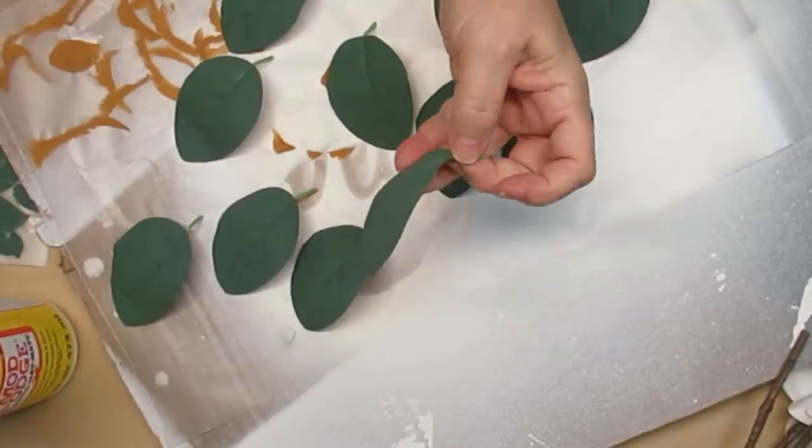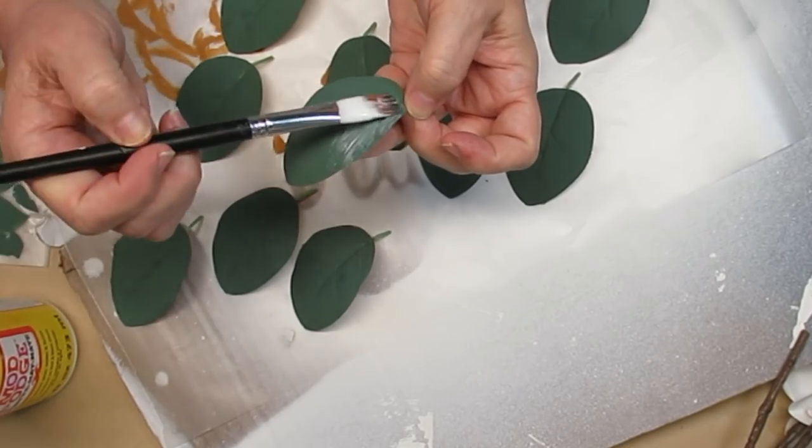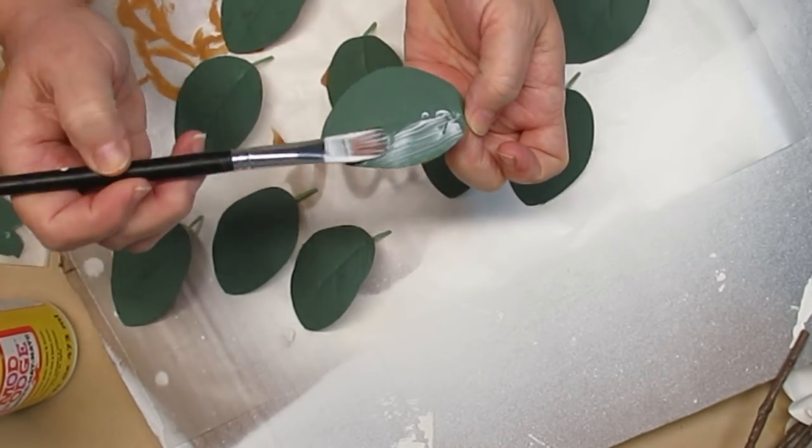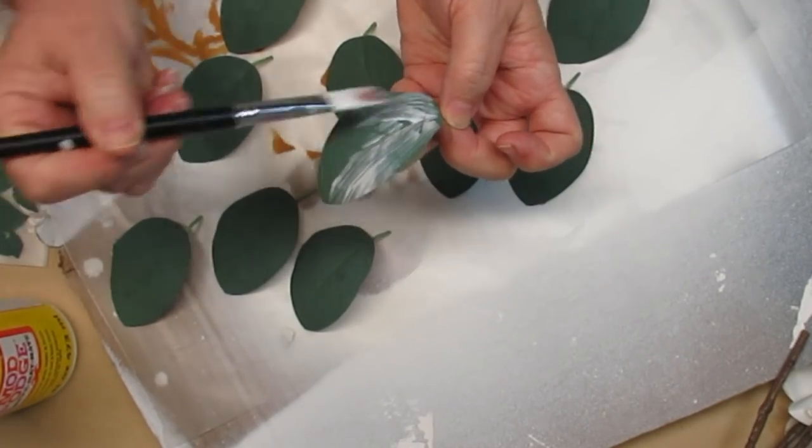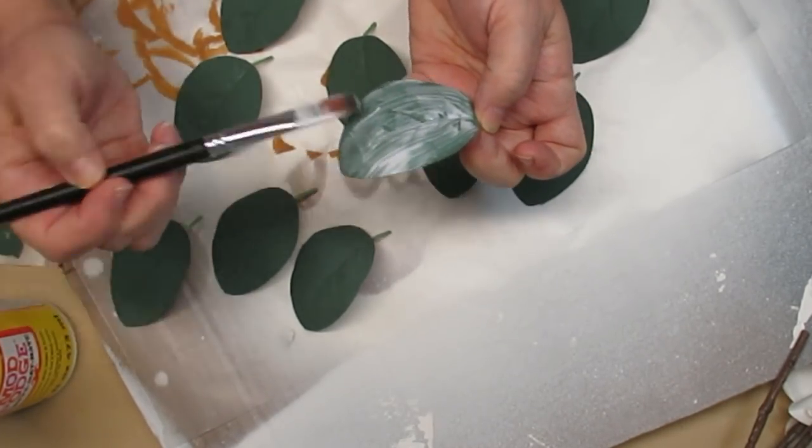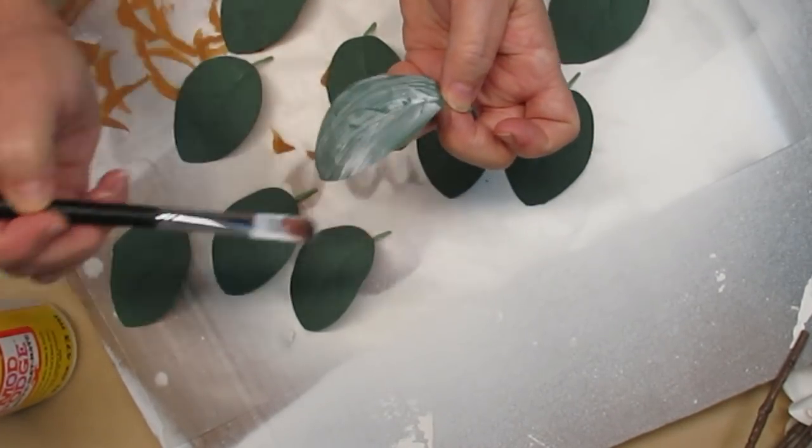True magnolia leaves have a bit of a shine on the top of them so I am taking my matte mod podge and I'm going to give them a coat and this is just going to shine them up just a little bit to make them look like they are real magnolia leaves.